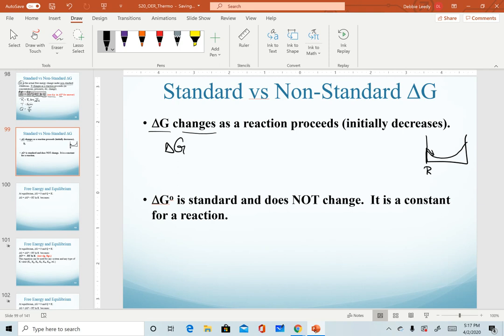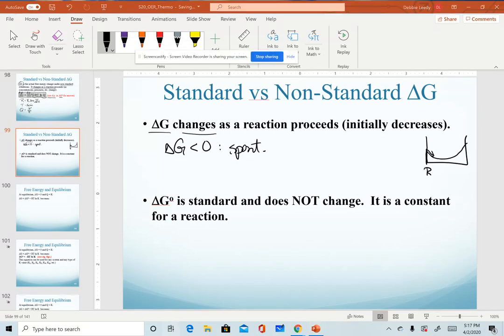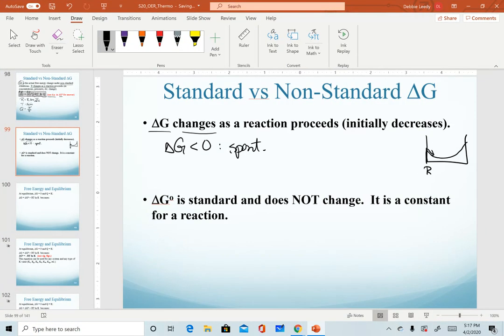And another reminder that with delta G non-standard, we are determining spontaneity for a reaction. So when delta G is negative, we say that a reaction is spontaneous at that point. When we say that delta G is positive, or calculate that it's positive, this tells us that at that point in a reaction, it is non-spontaneous.